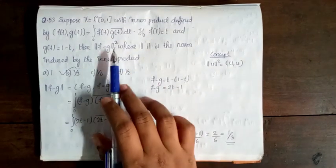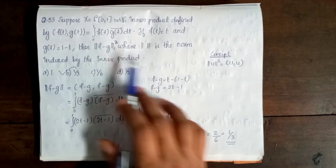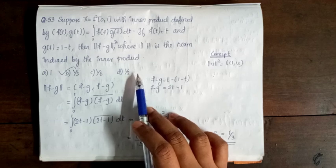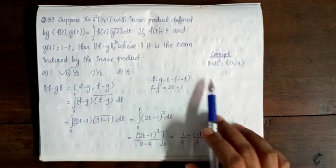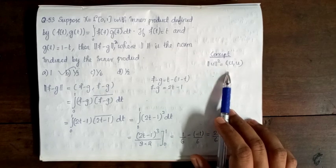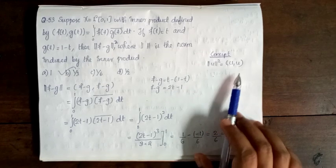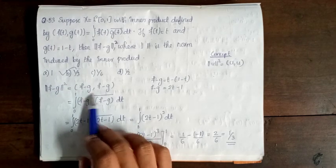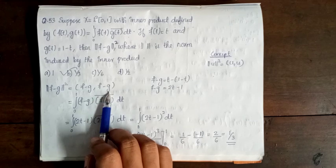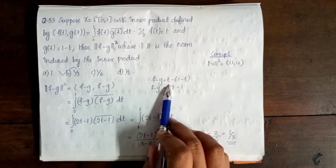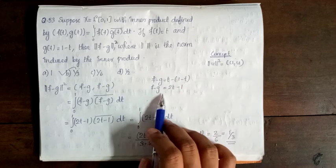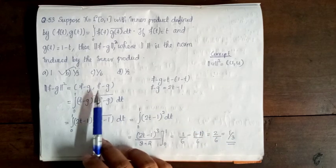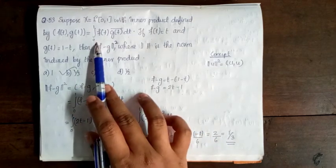We need to find ||f − g||². We know that ||u||² = ⟨u, u⟩. So ||f − g||² = ⟨f − g, f − g⟩. Now, f − g = t − (1 − t) = 2t − 1.